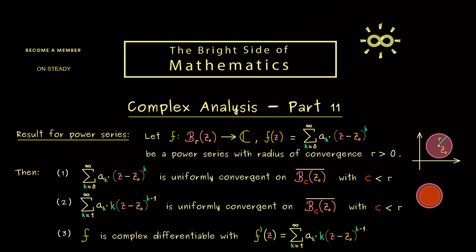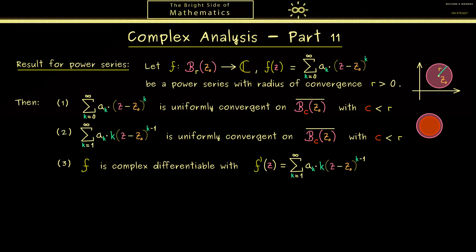This is an important result because it tells us that every power series is a holomorphic function. The proof is not so complicated — only part 3 will take some time. To make things easier, we assume the expansion point z0 equals 0. This is not a real restriction; the general case works exactly the same via a translation in the complex plane.